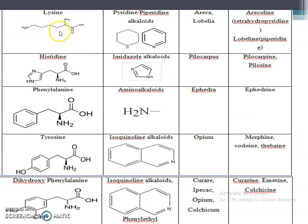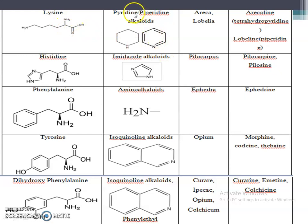Next is lysine - this amino acid gives rise to pyridine and piperidine alkaloids (unsaturated and saturated respectively). These ring structures are cyclized from the lysine amino acid. Examples of plants are areca and lobelia. Areca contains arecoline, which is a tetrahydropyridine, and lobelia contains lobeline, which is a piperidine alkaloid.